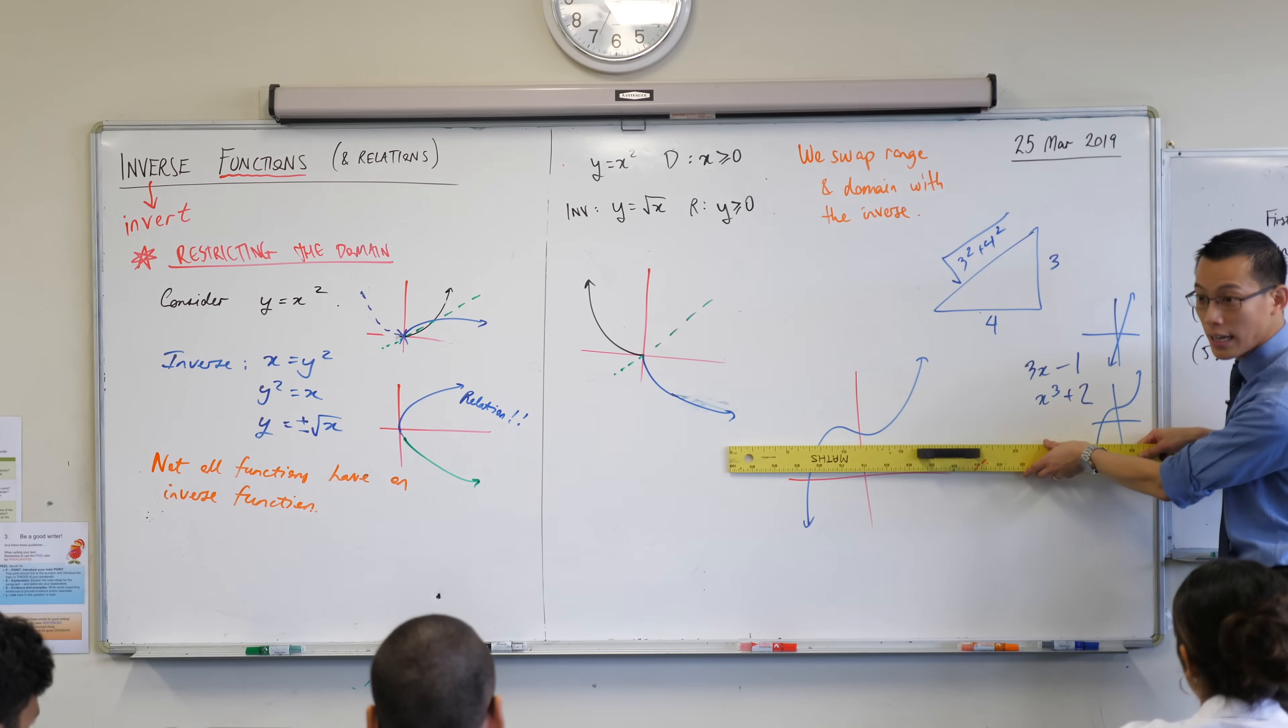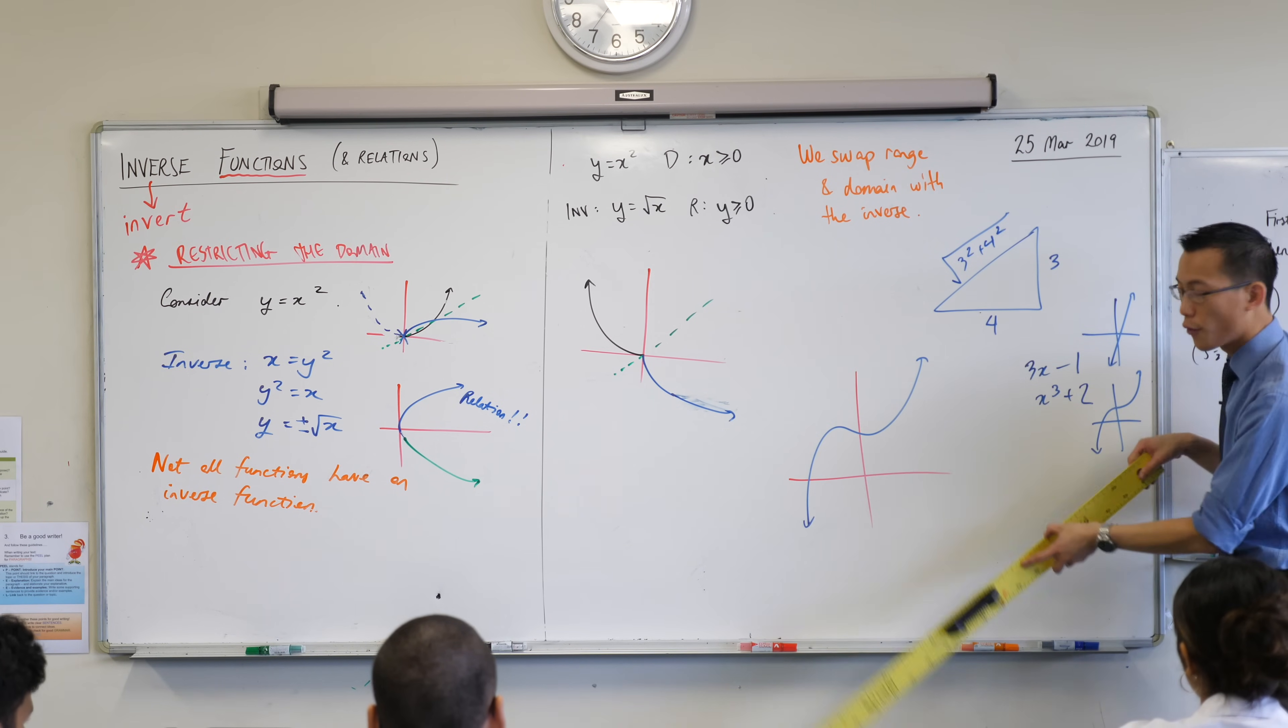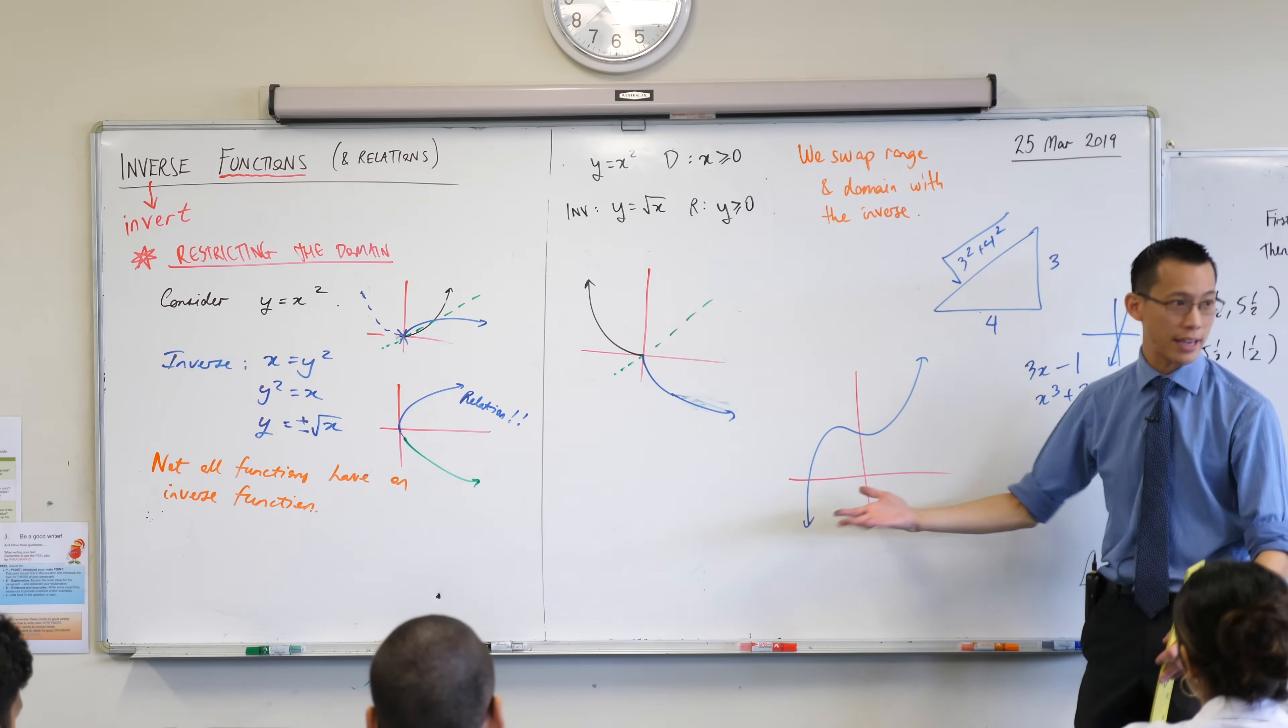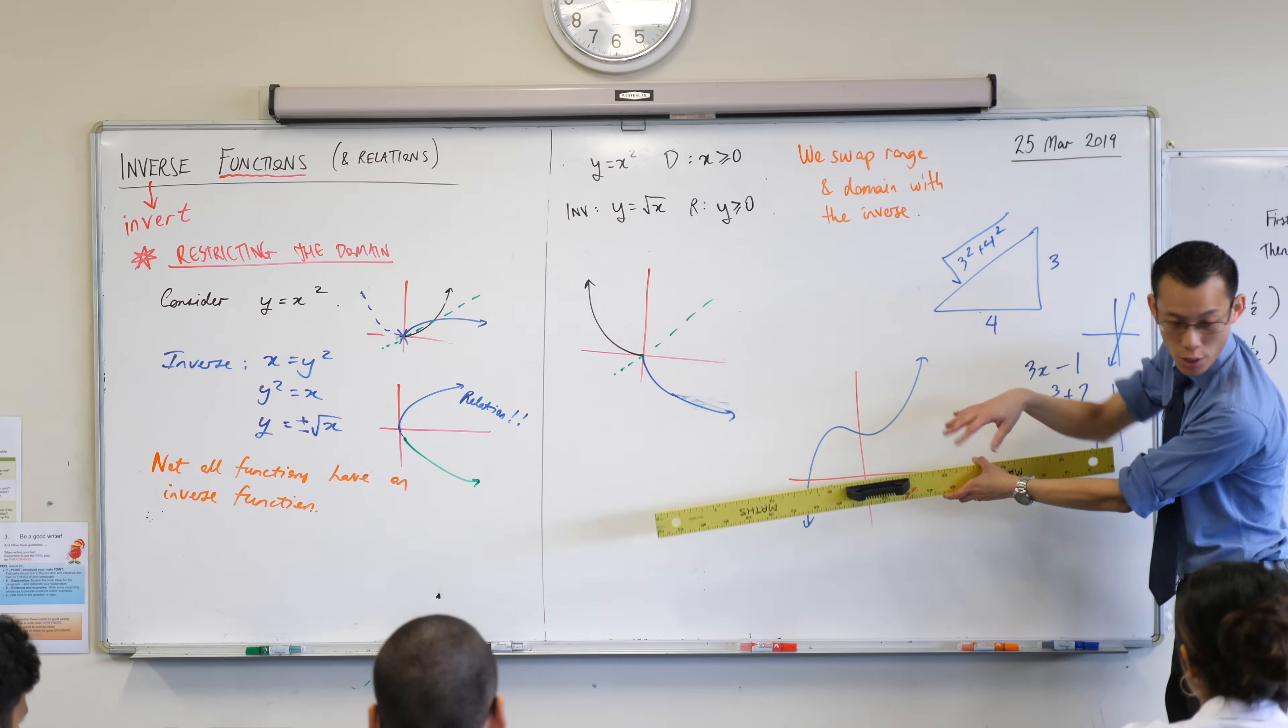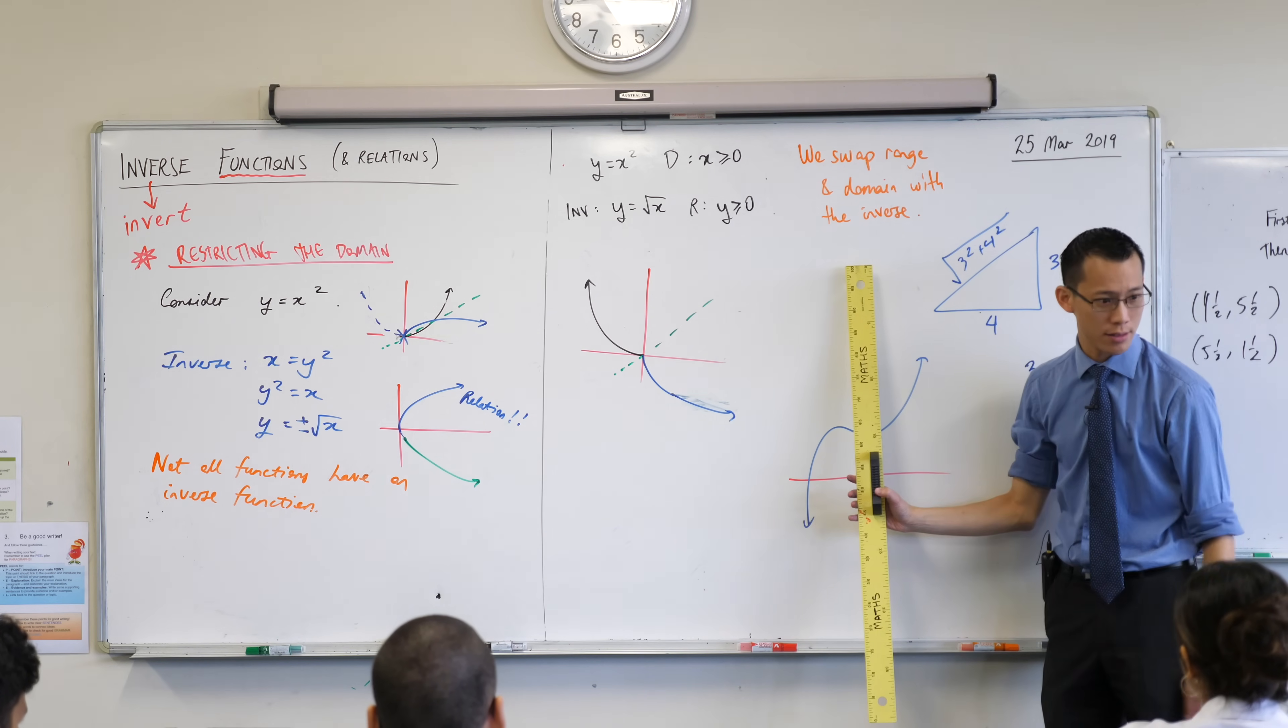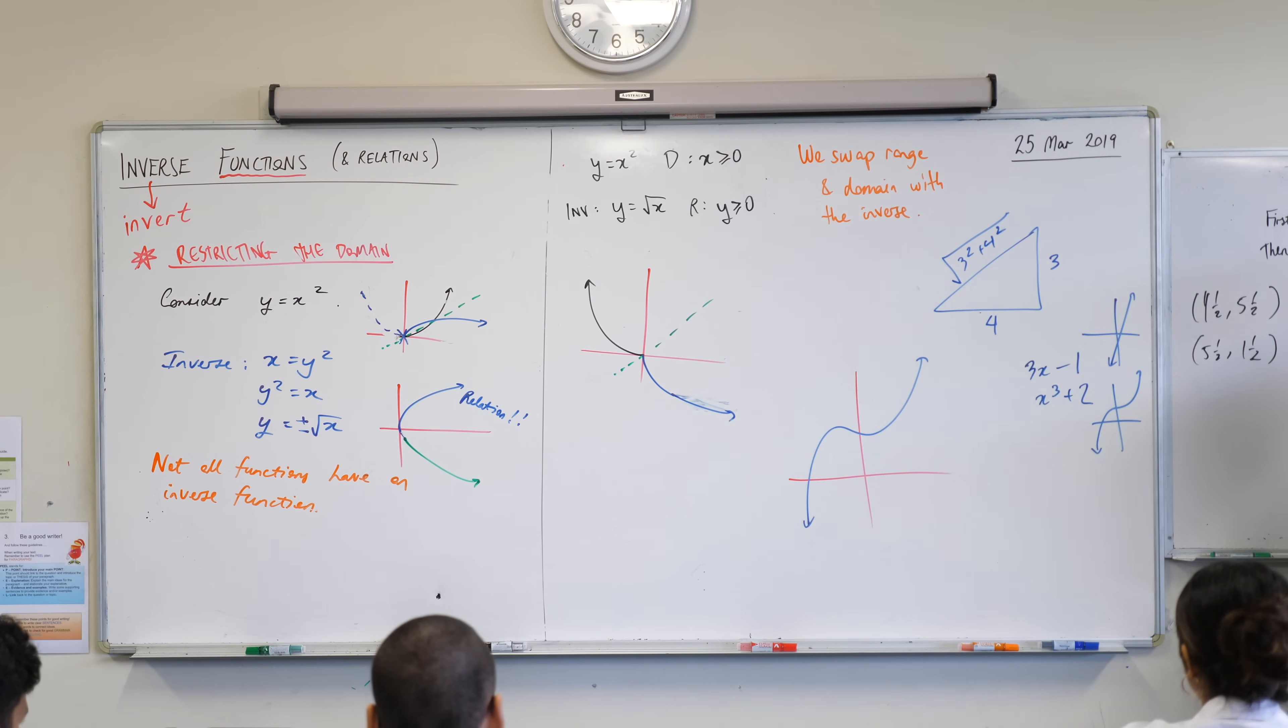Like anywhere up in here, you're in trouble. So if I swap this thing around, you will not get a function because this part here, once I reflect it over, will fail the vertical line test. Does that make sense? So I need to restrict the domain.